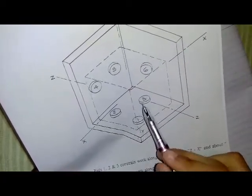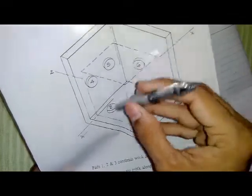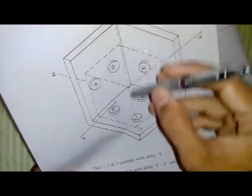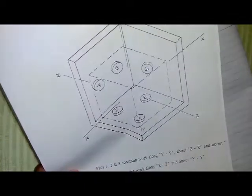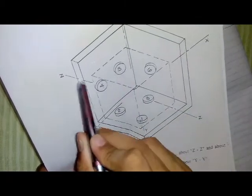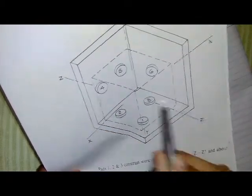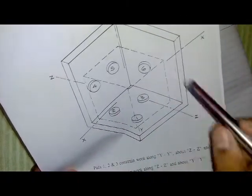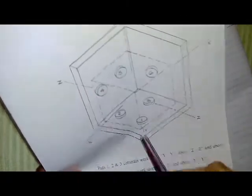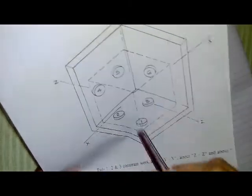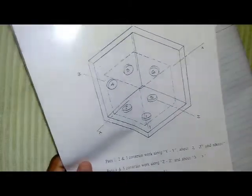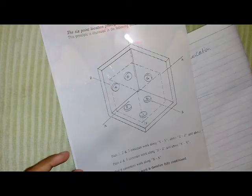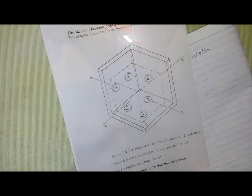These three points fix the body in the Y direction. Points four and five prevent moving in the Z direction, and point six prevents moving in the X direction. So all three directions are fixed, and the body will not move in any direction. This is called the six-point locating principle.